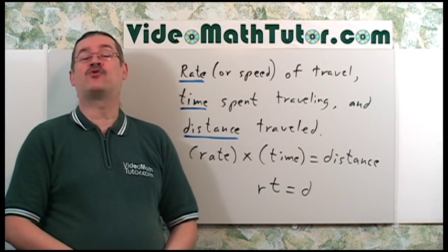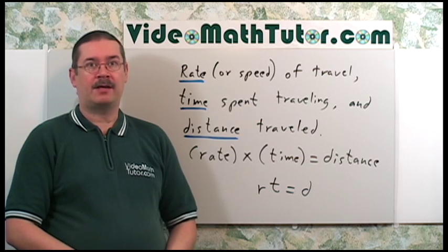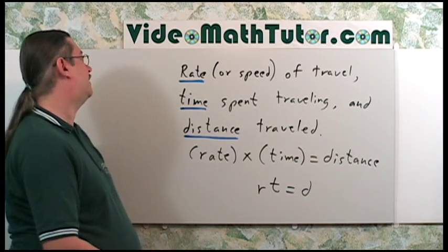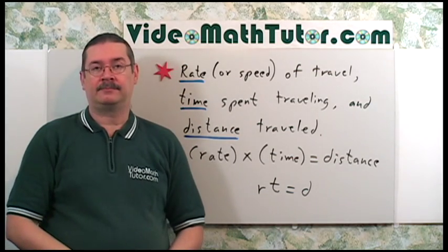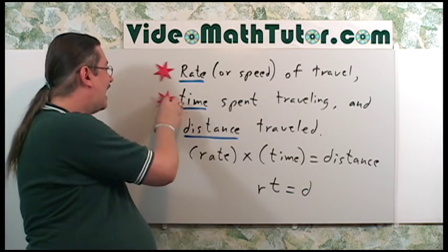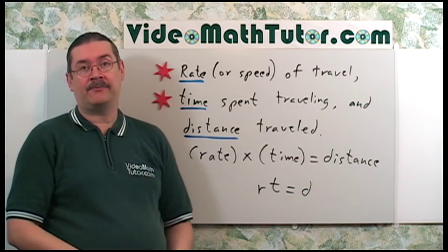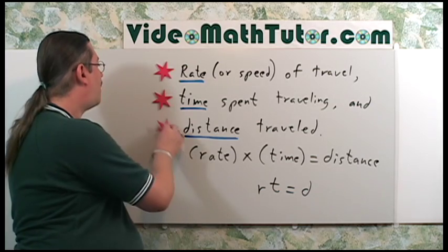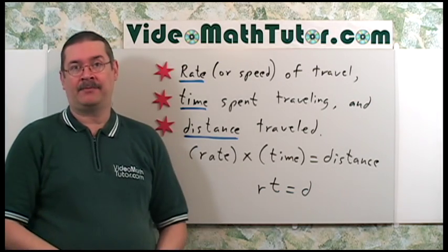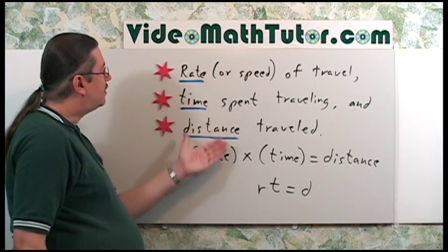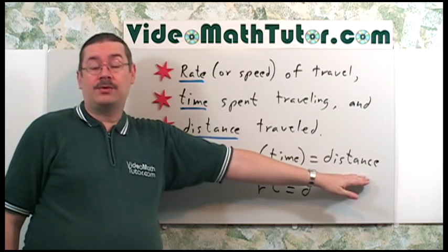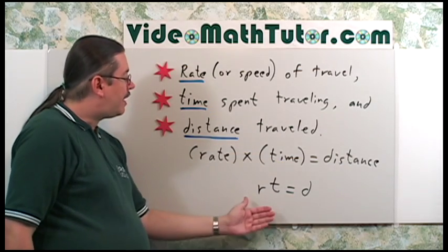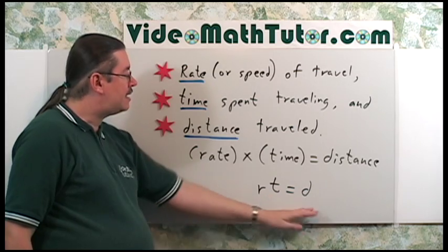A typical word problem may deal with travel situations. In these situations, we get a word about three things. First one is the rate or speed of travel. Second is the time spent traveling. And finally, we got to worry about the distance traveled. And we can relate these items in an equation like this: rate times time equals distance, or you can rewrite it as R times T equals D.